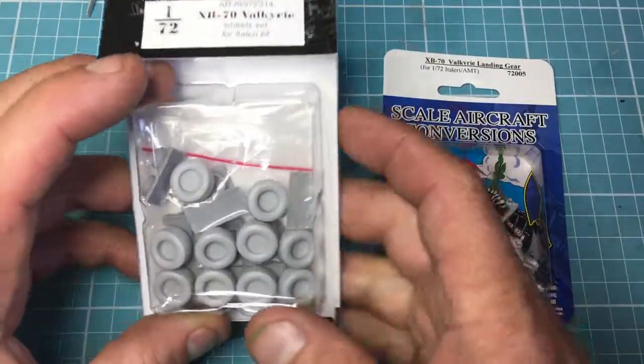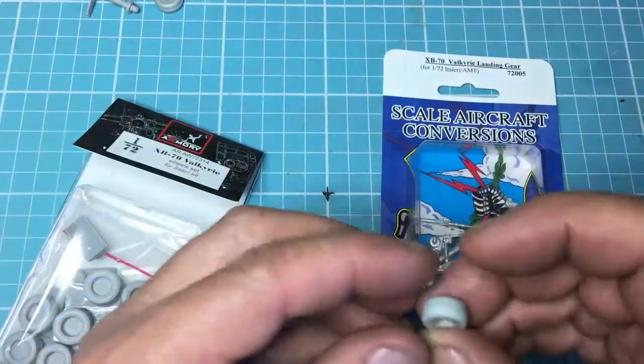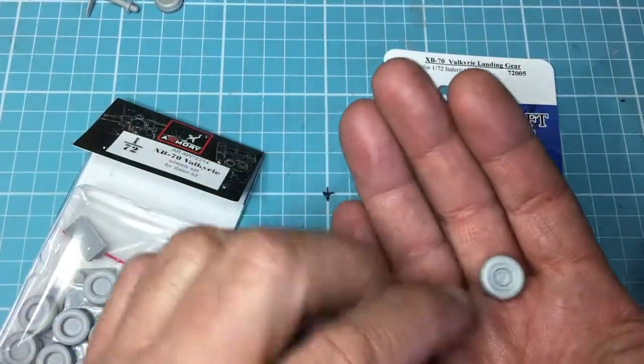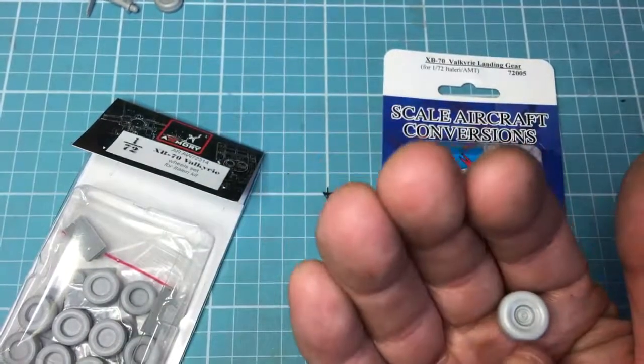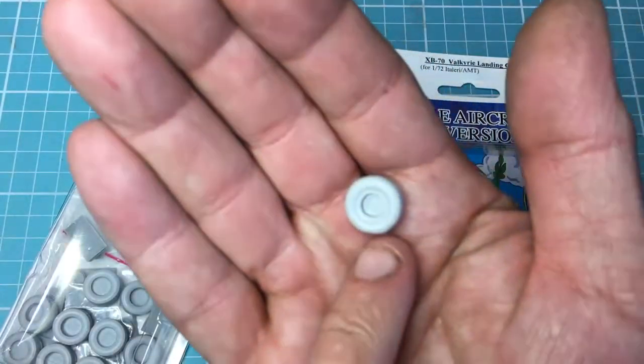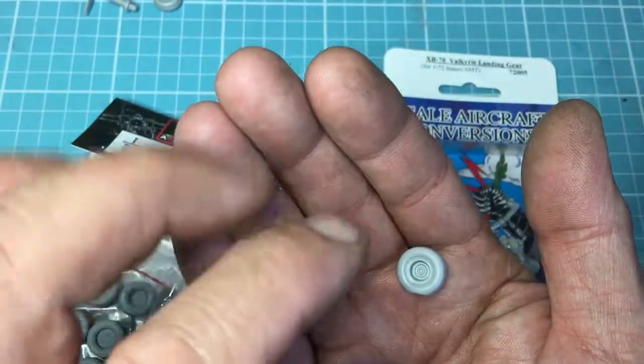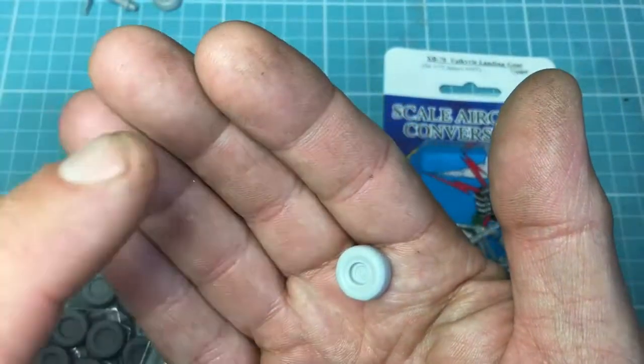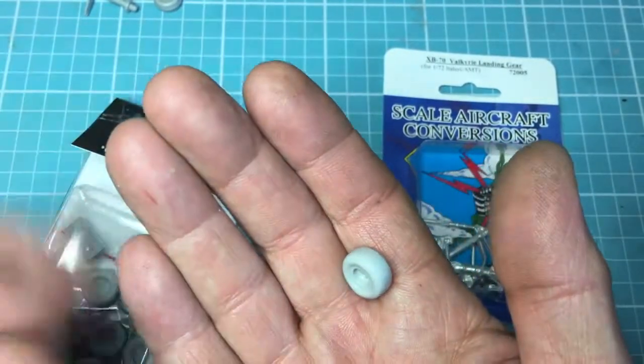I want to start off by looking at these. The reason I've bought these is because the kit wheels have an over-exaggerated fake flat spot. There's no tread pattern. The alignment pins put the wheels out of line, and then when you glue them together you find that one side's bigger than the other anyway.